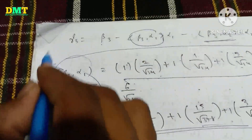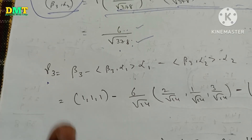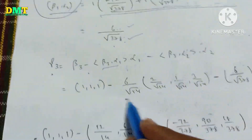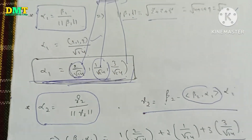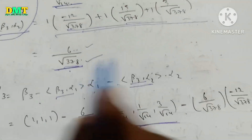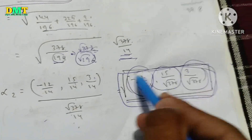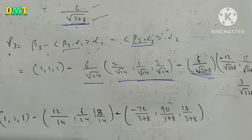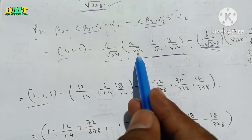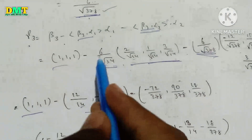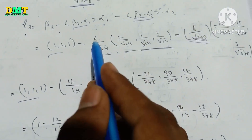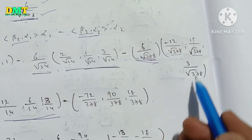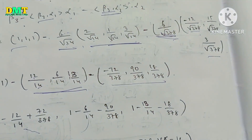We have to change this value now using the Gram-Schmidt formula: gamma3 equals beta3 minus (beta3 comma alpha1) times alpha1, minus (beta3 comma alpha2) times alpha2. We multiply the same values. The denominator for the first term is root14 times root14 equals 14, and for the second term root378 times root378 equals 378. So the denominators are 14 and 378 respectively. Every denominator resolves: 6 times 2 is 12, 6 times 1 is 6, 6 times 3 is 18. Then minus 6/root378 times alpha2 components. The denominator is 378.